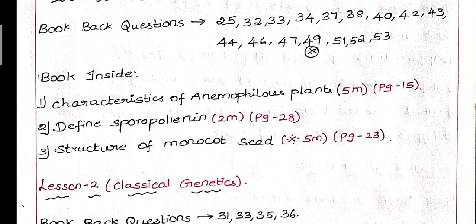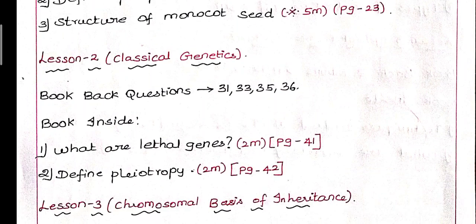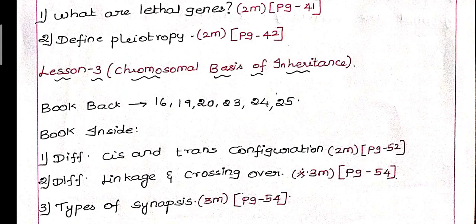Next question is structure of monocot seed or dicot seed, page number 23, important 5 mark. First lesson, that is classical genetics. Next book is what are lethal genes, 2 mark government question, page number 41. Next, define pleiotrophy, also 2 mark, page number 42, government question.